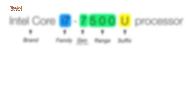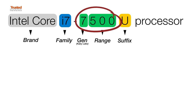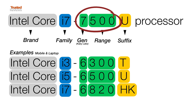The four-digit number after the i3, i5, or i7 tells you how powerful that processor is in which generation. The first number is the generation, and then the other three numbers tell you how far up the range in that generation you are. So the higher those three numbers, the more powerful your processor is, with a few exceptions.